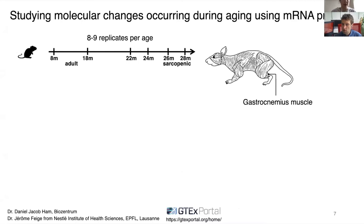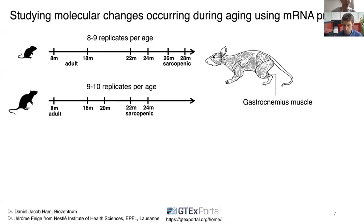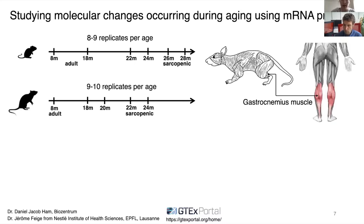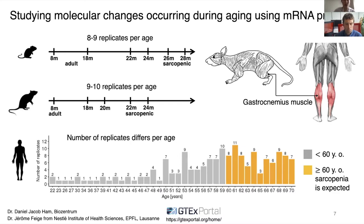To answer these questions, we collected samples of the hind limb gastrocnemius muscle of mice at various ages from 8 to 28 months, which were sequenced and analyzed. From our collaborator we obtained a comparative RNA-seq dataset for gastrocnemius muscle in rat. For human, we used the publicly available GTEx resource containing sequencing data for numerous tissues including gastrocnemius muscle, with sample ages ranging between 22 and 70 years. We expected sarcopenia in individuals at age 60 or higher.